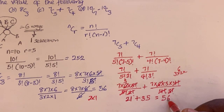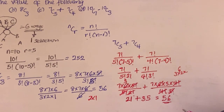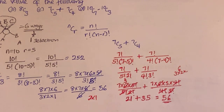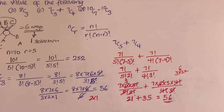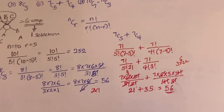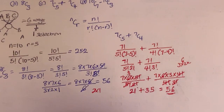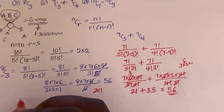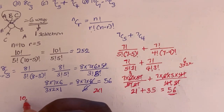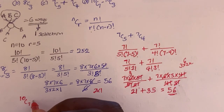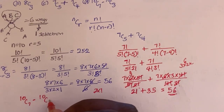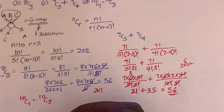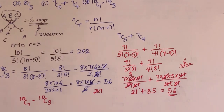So the answer to the third question is 56. Now let's move to the last one, which is 10C7 minus 10C3.